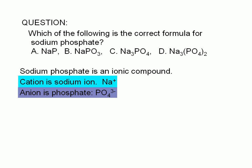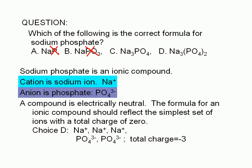At this point, we can eliminate choices A and B. Neither choice has a PO4 group in the given formula. How do we determine the correct answer from choices C and D? A compound is electrically neutral. The formula for an ionic compound should reflect the simplest set of ions that give a total charge of 0.